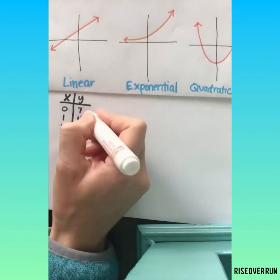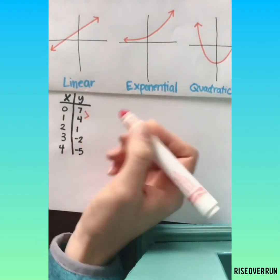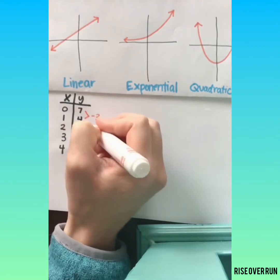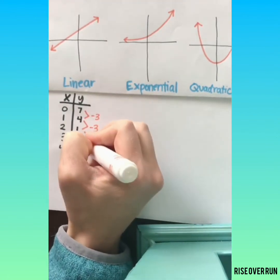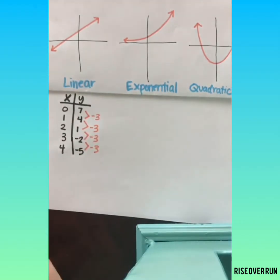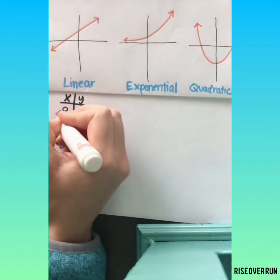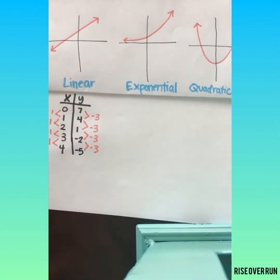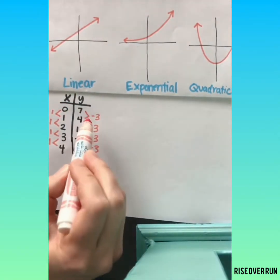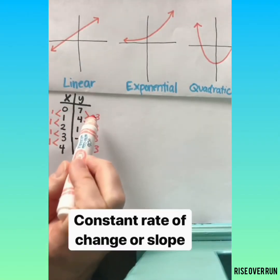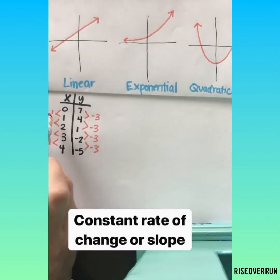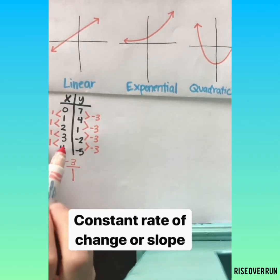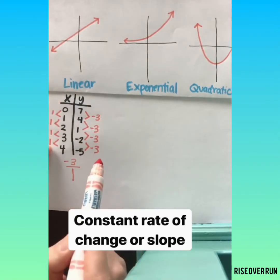Alright, now we're going to see what the change is in these y values. 7 to 4 is going down by 3, down by 3, down by 3. Over here, let's see what's happening. Going up by 1 every time. That means my rate of change is constant. It's constantly decreasing 3 for every 1 or a slope of negative 3 over 1. Whenever you have a linear relationship, you'll have a constant rate of change.